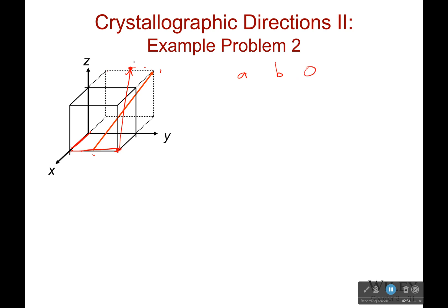Now, what's the point coordinates for this? Well, I go a distance negative a, I go a distance b over 2 in the y, and I go a distance c in the z.